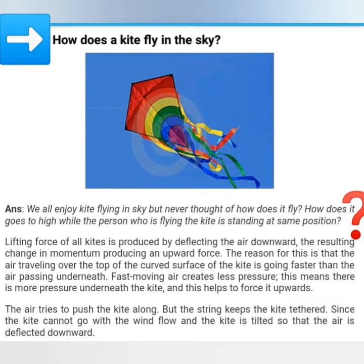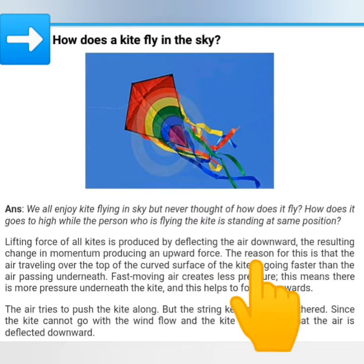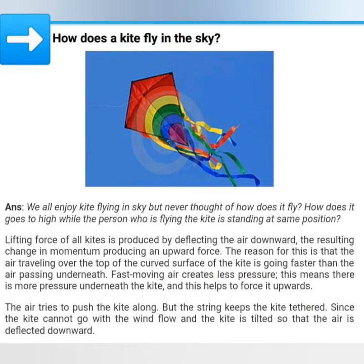The lifting force of all kites is produced by deflecting the air downward. The resulting change in momentum produces an upward force. The reason for this is that the air traveling over the top of the curved surface of the kite is going faster than the air passing underneath.